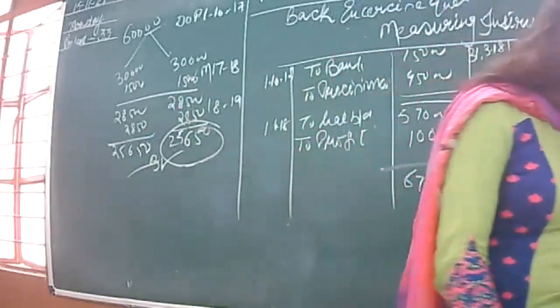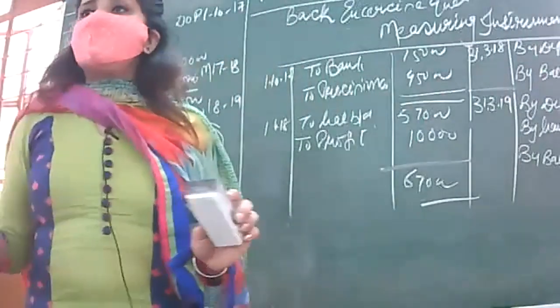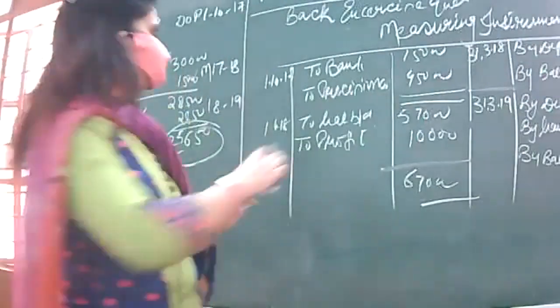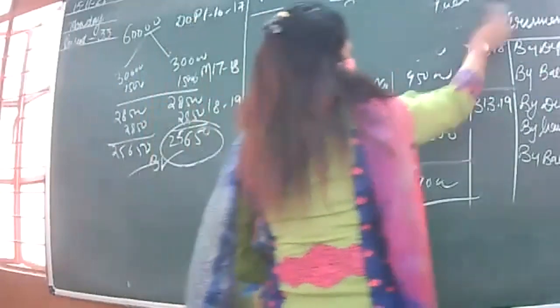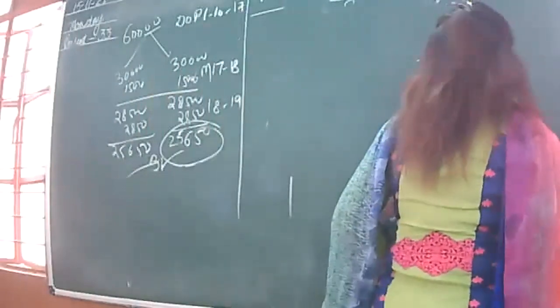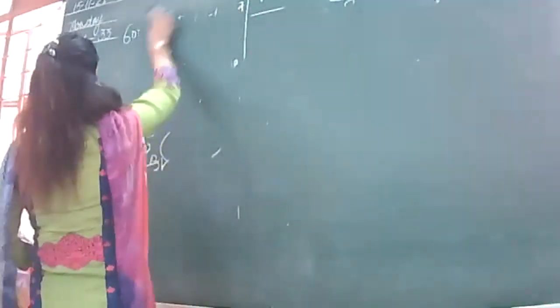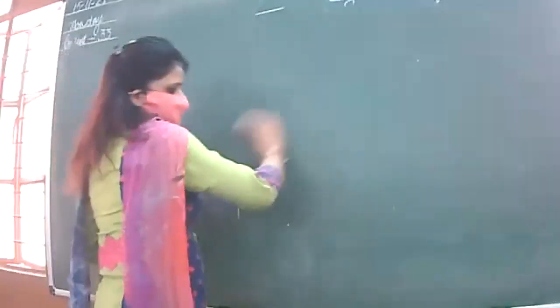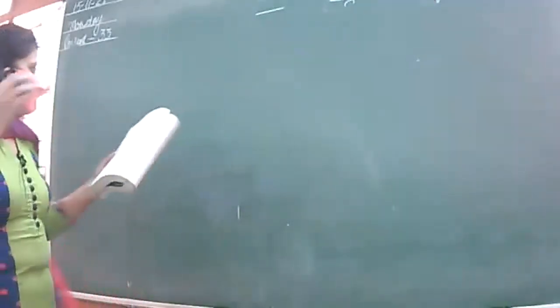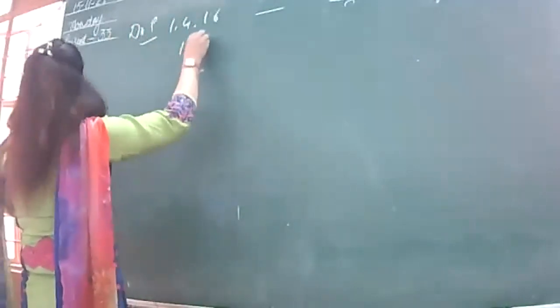Let's see the next question. Start reading the 29th question from the back exercise. Let's read question 29. A machine was purchased for 10,000. Who purchased it? Ritu Chaudhary. The date of purchase is the beginning of the year — 1st April 2016. The cost of the machinery is 10,000.